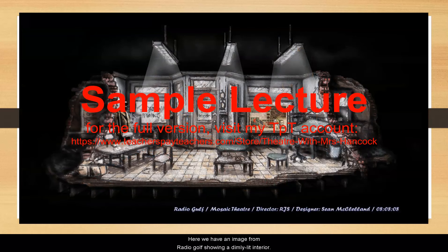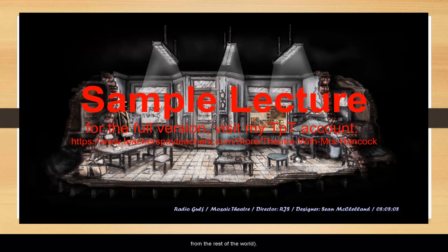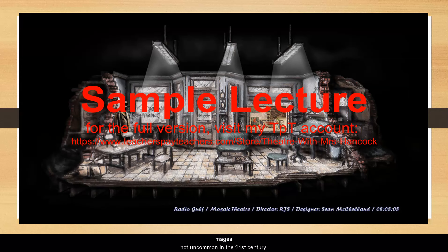Here we have an image from Radio Golf, showing a dimly lit interior. Notice the walls are deconstructed, meaning they look like a chunk of the world was taken and put on stage. This is a realistic space — a real estate agency — but rendered in an unrealistic way, crumbling and detached from the rest of the world. There is a figure stage right to give scale, a suggestion of light, and it appears that this image is a mixture of hand-drawn and computer-generated, not uncommon in the 21st century.